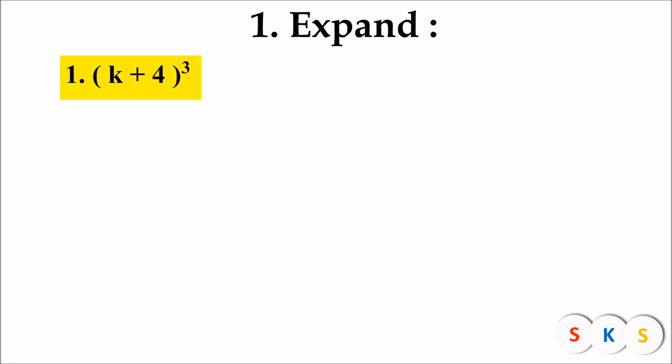Here we have question number 1: (k + 4) the whole cube. This question is in the form of (a + b) the whole cube, and we know that (a + b)³ equals a³ + 3a²b + 3ab² + b³.